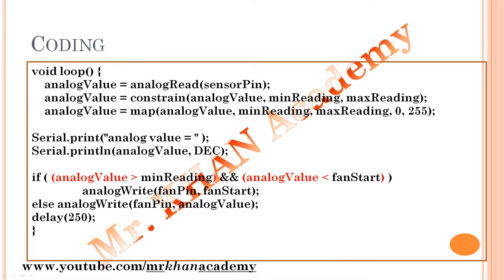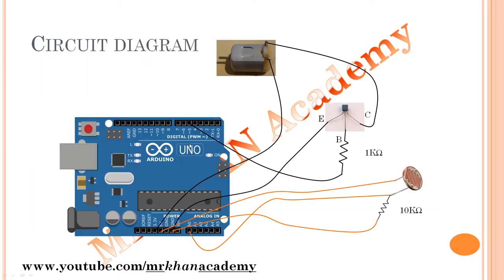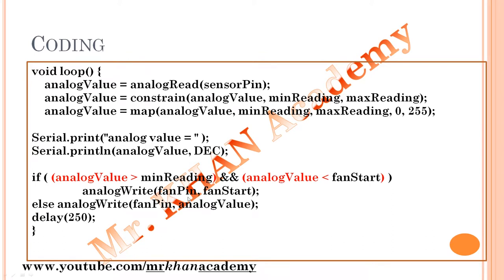`analogWrite` passes two values: first the pin — `fanPin` which is pin 5, connected to the DC motor via transistor. Then the duty cycle: at what rate should it run. If the reading is between 30 and 100, we pass a constant speed of 100. The minimum is 0, maximum is 255, and 100 is an intermediate value. In the `else if` condition: if the value is greater than 100, we call `analogWrite(fanPin, analogValue)` — so 255 passes full speed, 0 passes nothing, and values between 30 and 100 run at constant 100. A delay of 250 milliseconds is used before the next cycle.